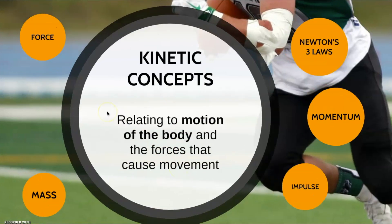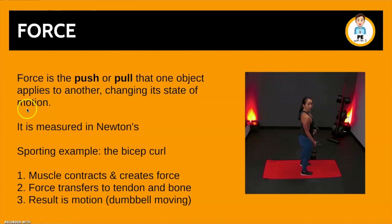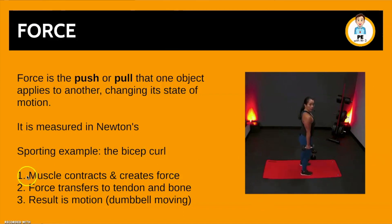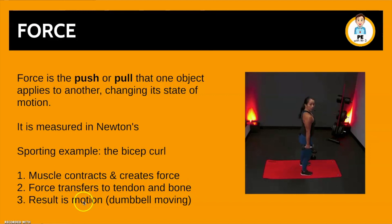Let's start with force. Force is the push or the pull that one object applies on another, changing its state of motion. It is measured in newtons, and the sporting example is the bicep curl as we can see in the video here. The muscle contracts and this creates a force. The force transfers to the tendon and bone, and the result is motion — the dumbbell moving.